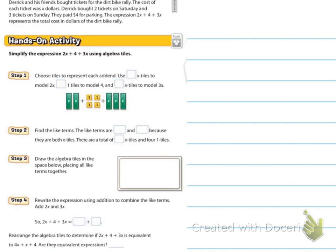So, it says to simplify the expression 2X plus 4 plus 3X using algebra tiles. So, choose tiles to represent each addend. So, for 2X, we're going to use 2X tiles. So, remember that I just used the sticks for that, right? And then, we're going to use 4X tiles, which, remember I'm using the dots for that. And then, we're going to use 3X tiles to represent the 3X. So, that's going to be 3 more sticks.